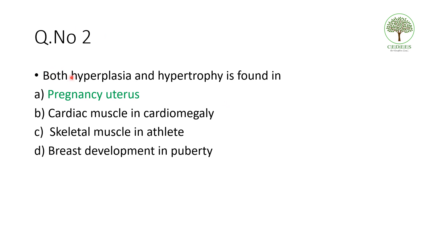Second question: where are both hyperplasia and hypertrophy found together? Hyperplasia and hypertrophy are cellular adaptations to stress. The cellular adaptations to stress include hyperplasia, hypertrophy, atrophy, metaplasia, and dysplasia. There are particular classic examples for each of these.